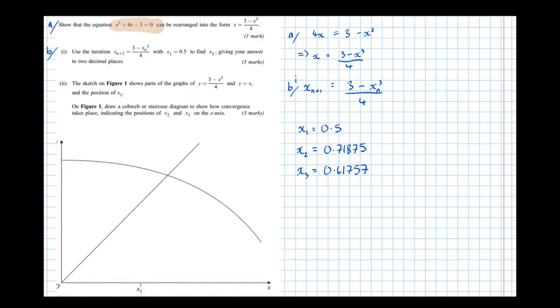b part 2. So what that requires us to do, it says the sketch on figure 1 shows parts of the graphs of y equals 3 minus x cubed over 4, and y equals x, and the position of our initial guess x1. On figure 1, draw a cobweb or staircase diagram to show how convergence takes place, indicating the positions of x2 and x3 on the x-axis.